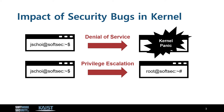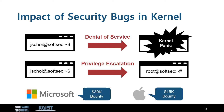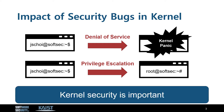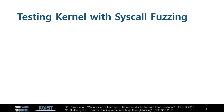Because of their security impacts, Microsoft and Apple are respectively offering bounties up to $30,000 and $15,000 for kernel bugs. This highlights the importance of kernel security. Therefore, there has been a growing research interest on finding kernel bugs.